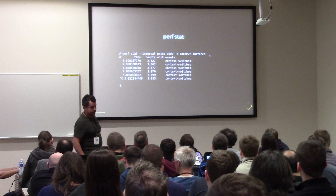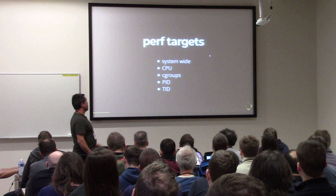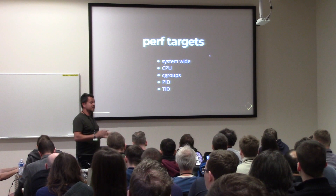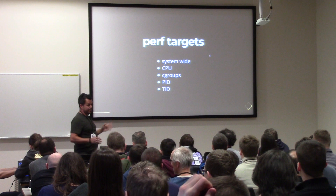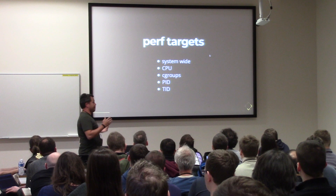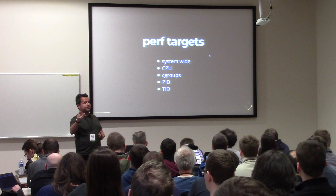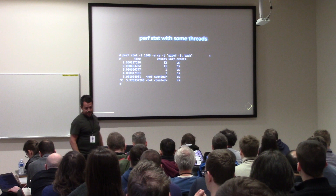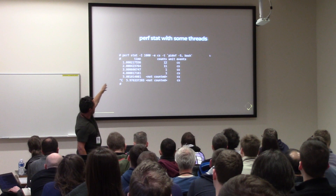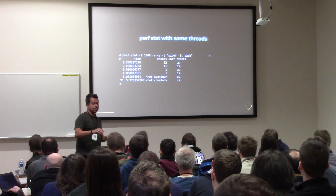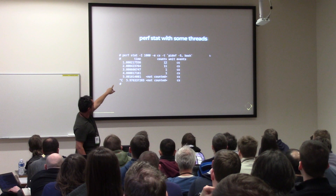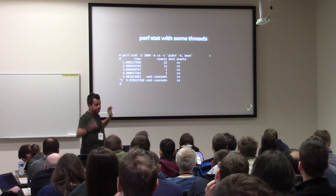It runs until you press Control-C. Perf targets are something powerful — all the things you can do with Perf you can do system-wide, for a specific CPU or set of CPUs, for a cgroup, for a PID and its children, or just a TID. You can even say for this TID on that CPU or do all sorts of combinations. Here I'm using Perf stat with some threads, looking at all the bash threads in the system. When the system was idle at the fifth second, there were no context switches.